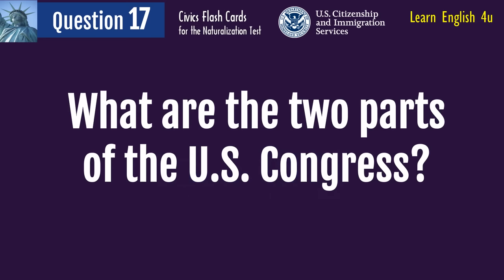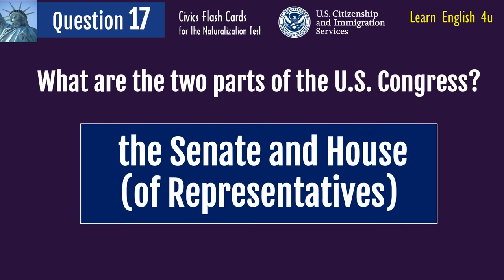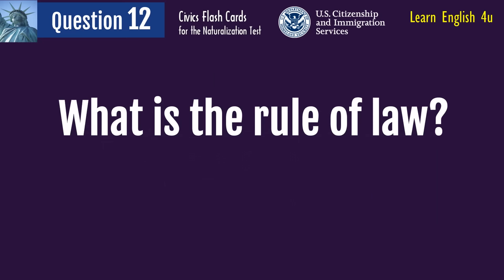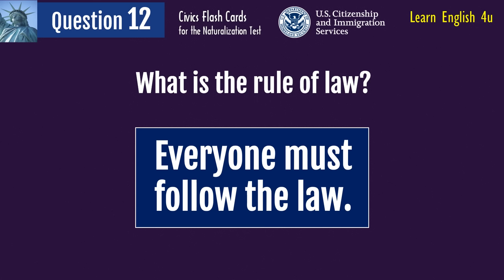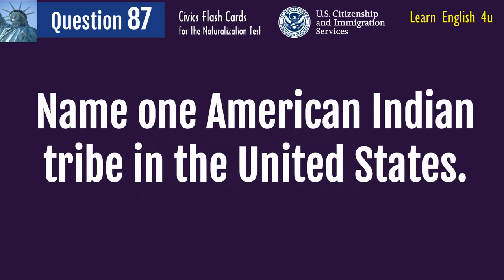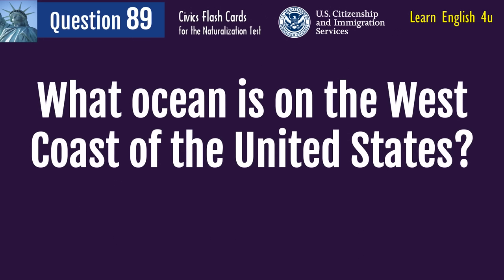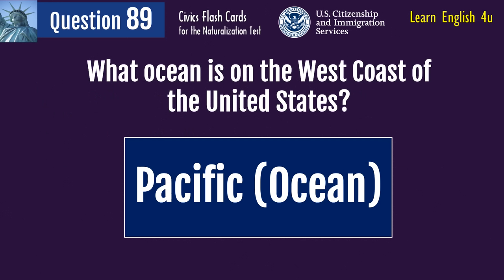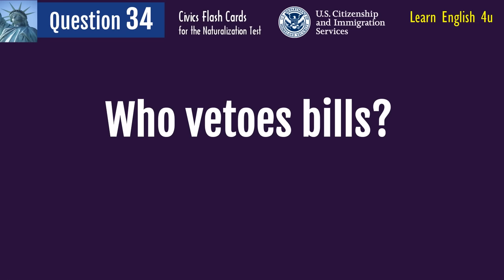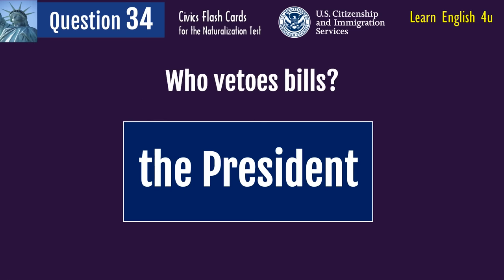What are the two parts of the U.S. Congress? The Senate and House of Representatives. What is the rule of law? Everyone must follow the law. Name one American Indian tribe in the United States. Cherokee. What ocean is on the west coast of the United States? Pacific Ocean. Who vetoes bills? The President.